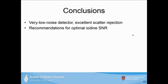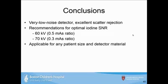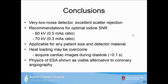In conclusion, successful ESA requires a very low-noise detector with excellent scatter rejection. Recommended parameters: for 60 and 120 kV, an mAs ratio of 0.5 is appropriate; for 70 kV, 0.3. These recommendations are applicable for any patient size and detector material. Heat loading may be managed by acquiring cardiac images during the diastolic phase. ESA would be a viable alternative to DSA in any case involving patient motion.